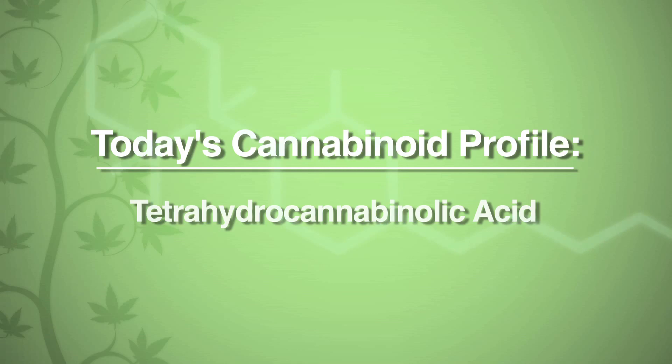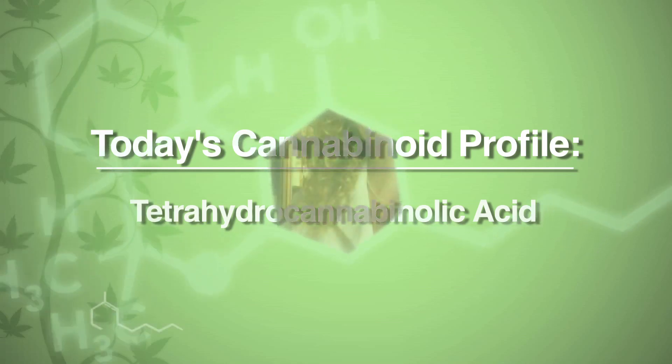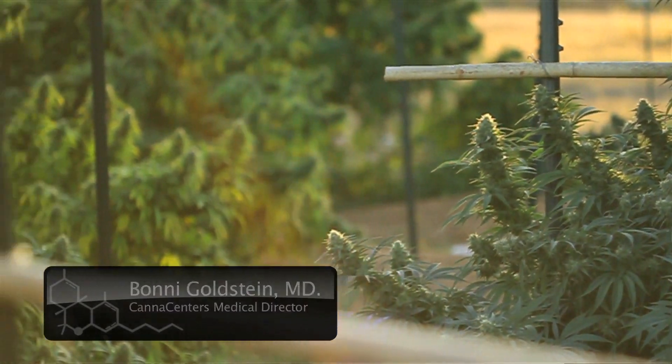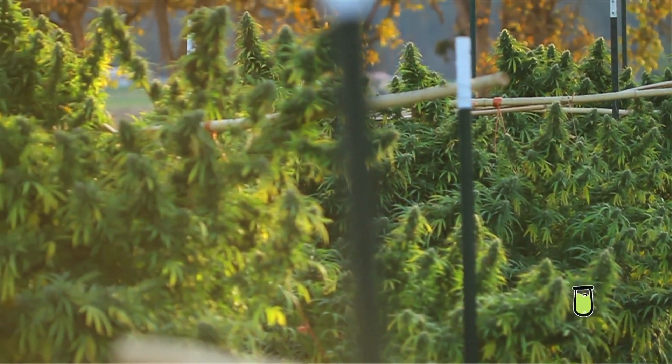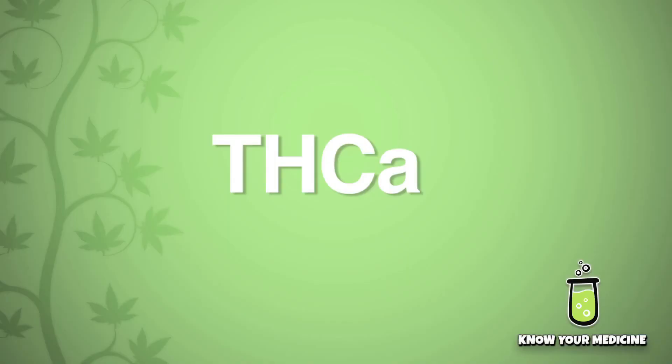THCA is another cannabinoid found in the cannabis plant. THCA stands for tetrahydrocannabinolic acid. Cannabis actually produces carboxylic acids as opposed to the non-acidic forms like THC, so when you hear of THC in plants, there's actually very little THC in plants — it's mostly THCA.